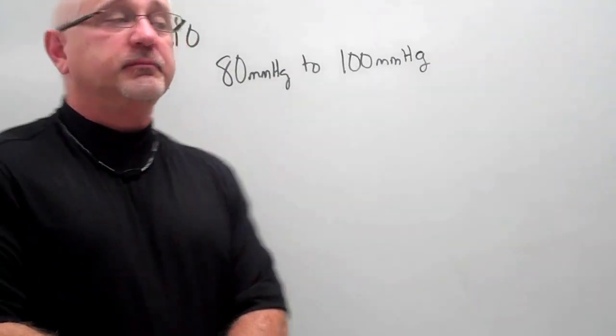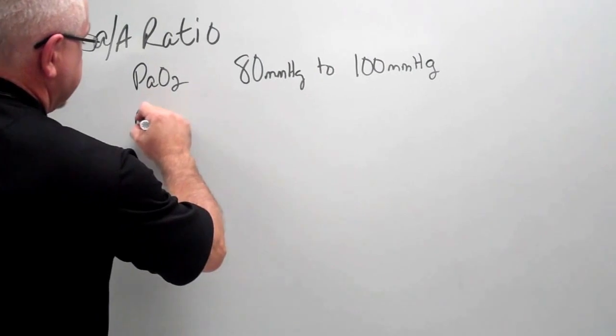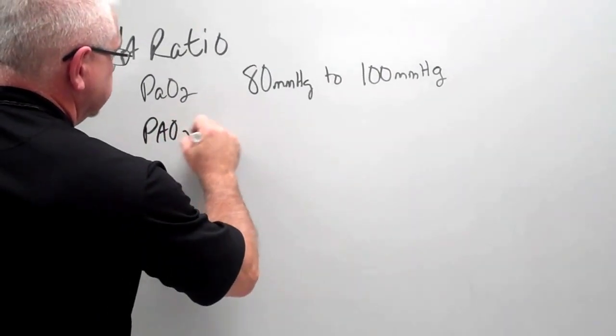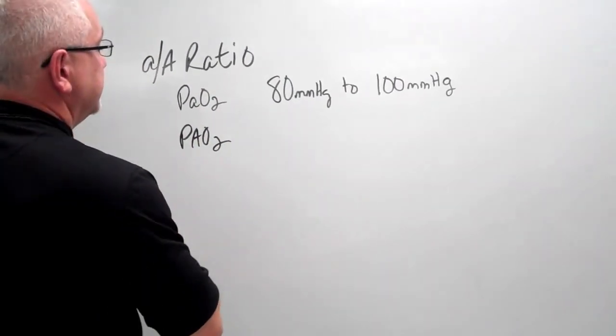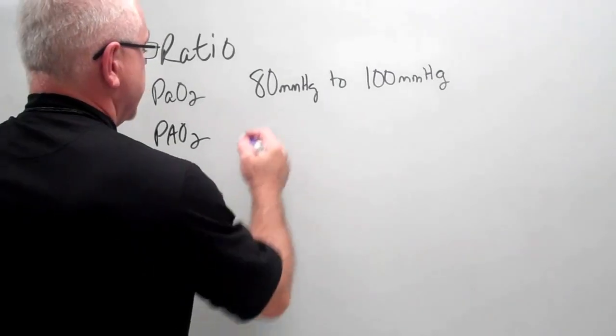Normal P big A O2, we just calculated that a moment ago, is going to be roughly 100 millimeters of mercury.